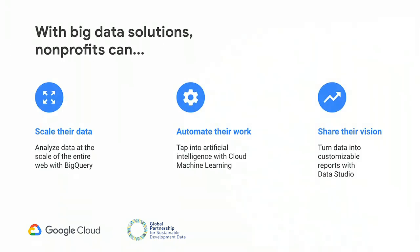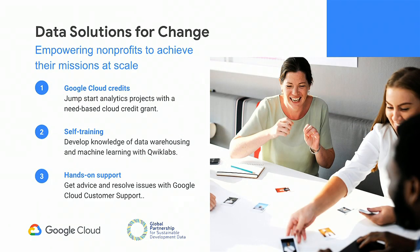Essentially, we understand that with big data solutions, nonprofits can scale their data. They can analyze data at the scale of the entire web with BigQuery, automate their work and tap into artificial intelligence with Cloud Machine Learning, and share their vision by turning data into customizable reports with tools like Google Data Studio. That's what underscores the Data Solutions for Change program, which addresses two key challenges nonprofits face when accessing data analytics solutions: financial and technical. The program offers a need-based Google Cloud credit grant, self-training resources through Qwiklabs, and hands-on support through Google Cloud customer support for a six-month grant period.